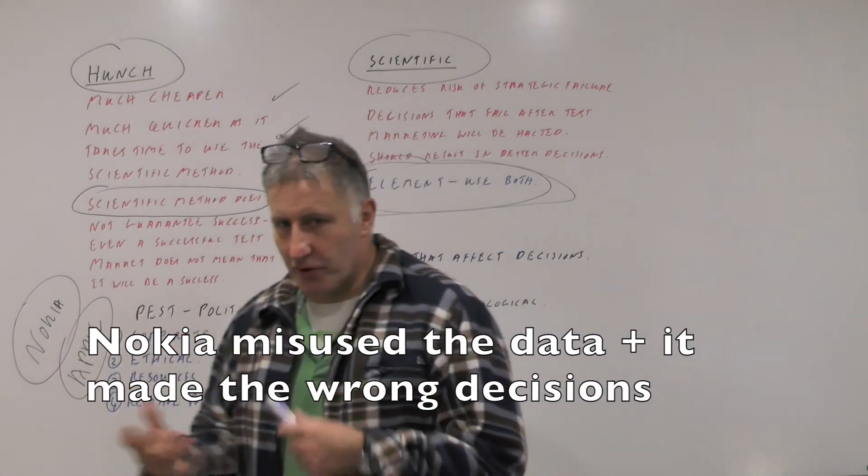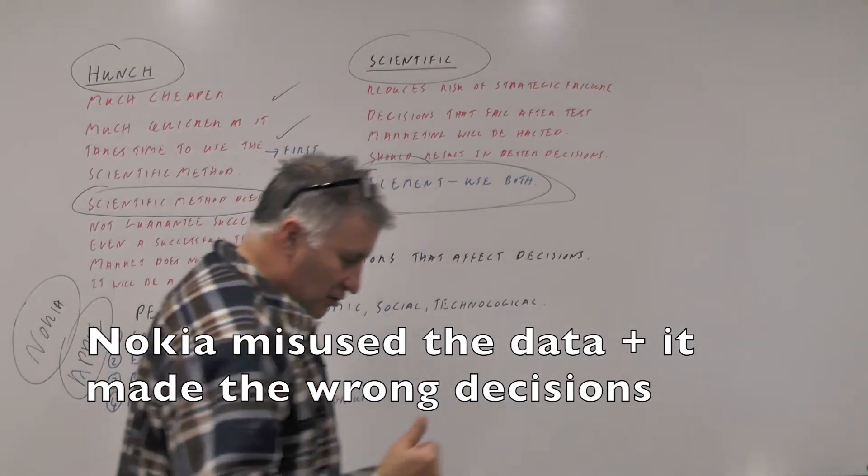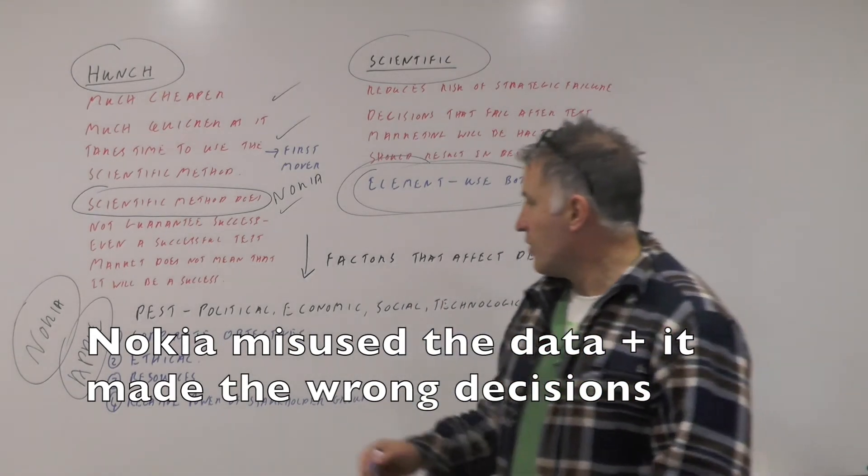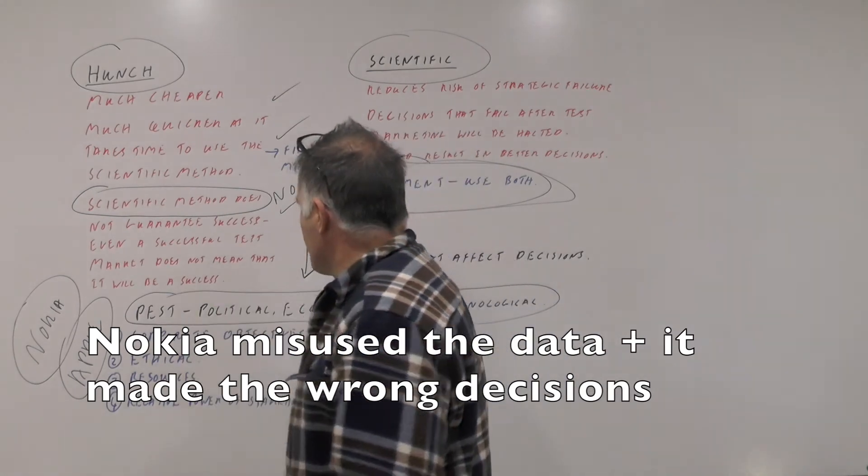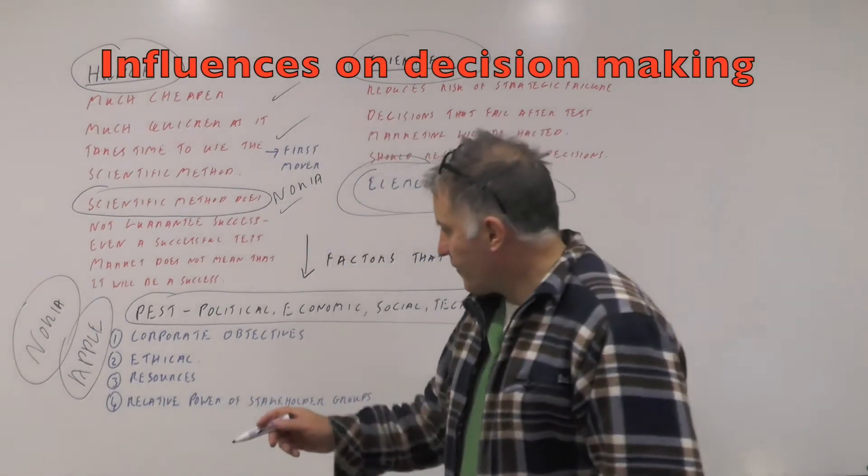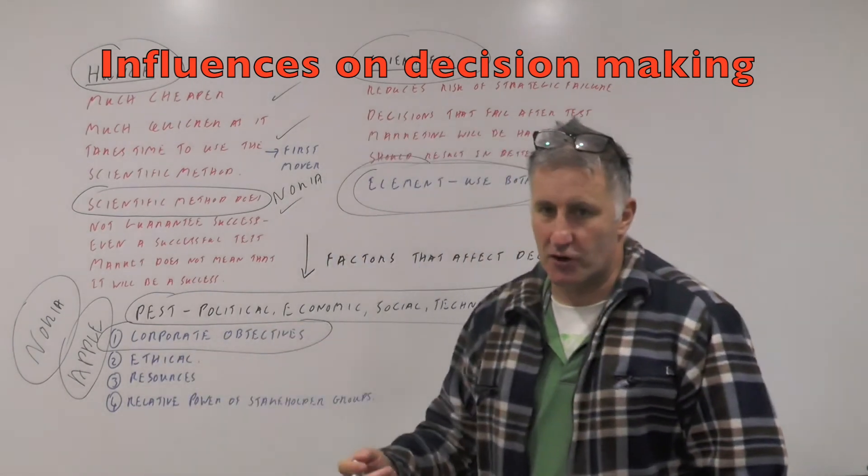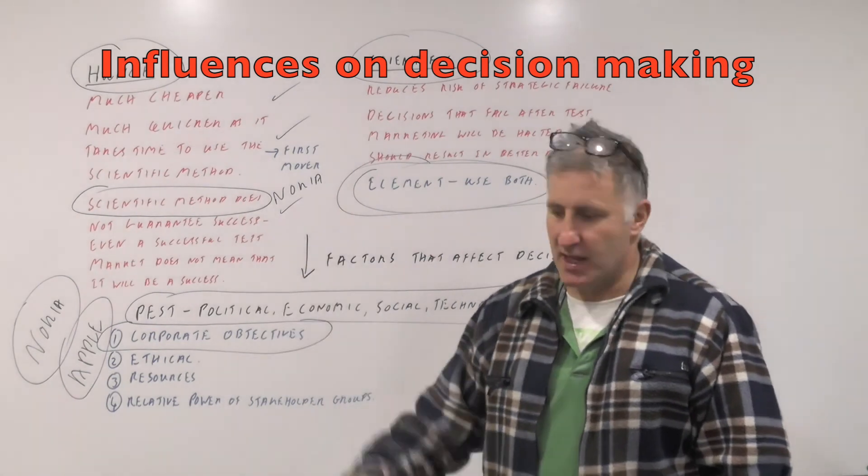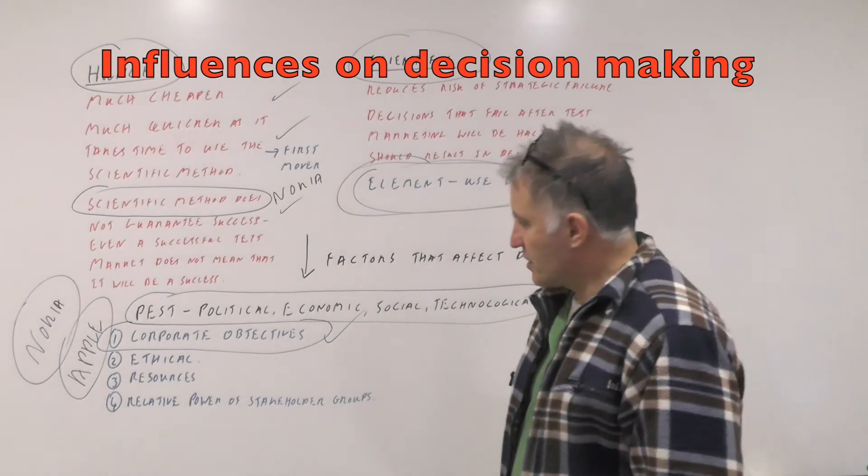When you make decisions, what are the factors that influence those decisions? We're doing this piece of what they call political, economic, social, and technological decisions - these are the external events that will affect firms. For example, a firm may have corporate objectives - clearly that's going to influence them. It may decide to move into a new market, increase profitability, or reduce costs. That will influence the decision-making process.